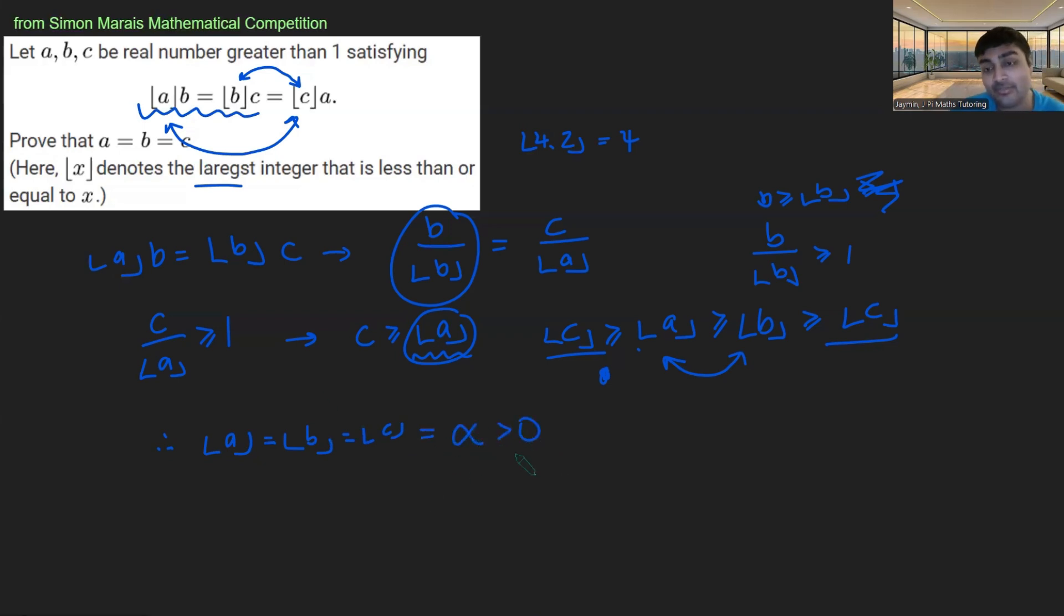I know that alpha is positive. In fact, it's at least one. Then I get alpha B equals alpha C equals alpha A for my equation. And I can just divide through by alpha and get that A equals B equals C. And that would solve our problem.